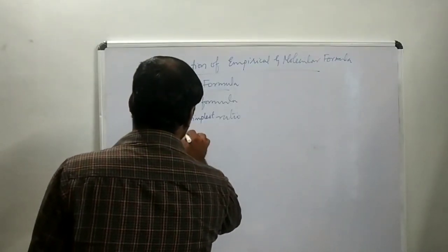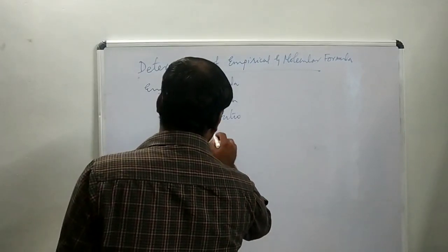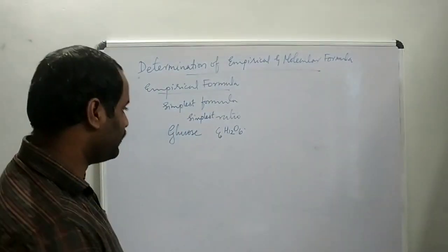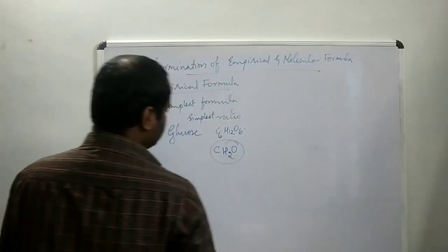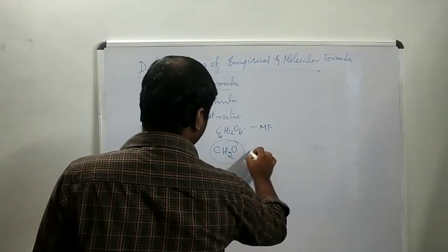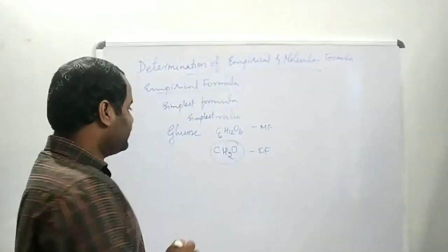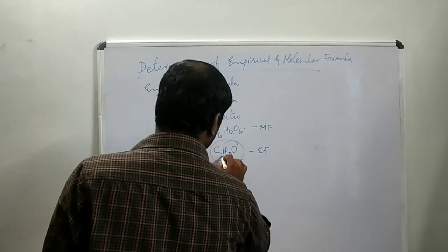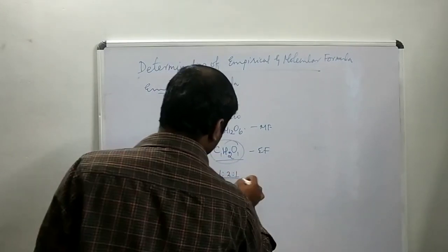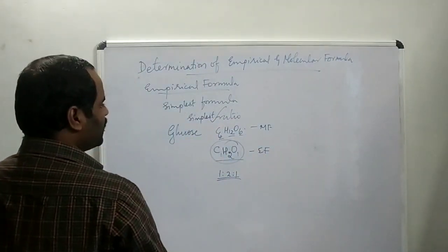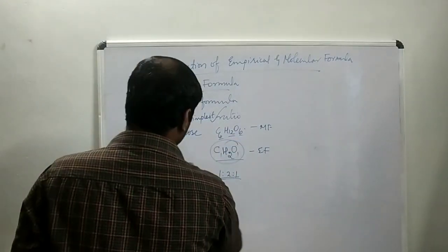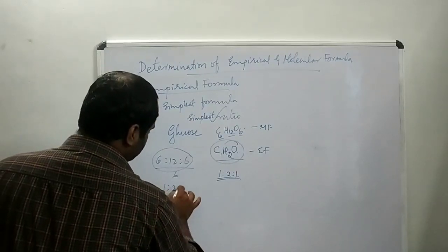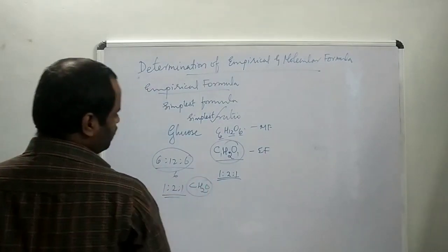We can take the example of glucose. The empirical formula of glucose is CH₂O. We can say it is the simplest ratio — 1 is to 2 is to 1. The molecular formula of glucose is C₆H₁₂O₆, and the ratio between carbon, hydrogen, and oxygen is 6:12:6. If you divide all numbers by 6, you get 1:2:1, giving empirical formula CH₂O.